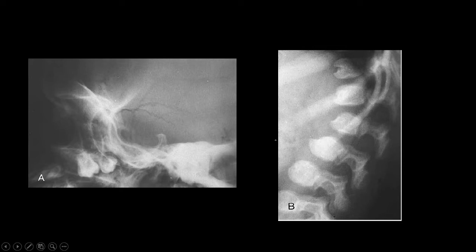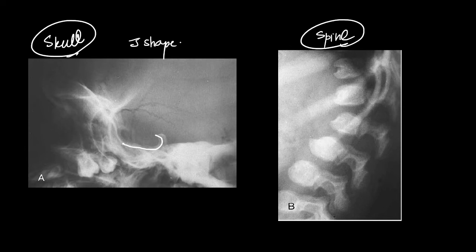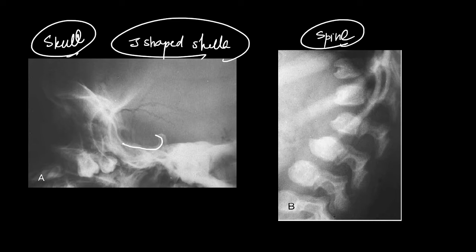Coming to the second case — another very important skeletal dysplasia that every student should be aware of. This is an X-ray of the spine and an X-ray of the skull lateral view. In this patient you can see a J-shaped sella, and in the second image there is inferior beaking of the vertebra.